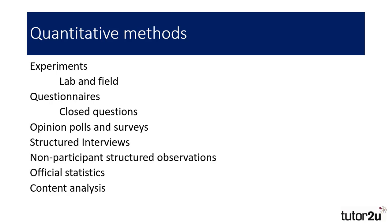We'll look first at some of the methods that produce quantitative data. These tend to be more structured in nature, and often the researcher is detached from the research subjects to allow for an objective viewpoint. Approaches used in natural sciences such as experiments — both lab or controlled, and field experiments — usually produce quantitative data. In these experiments, the independent variable is manipulated and the dependent variable measured. They are also usually subjected to statistical tests to assess the probability of the results being achieved by chance.